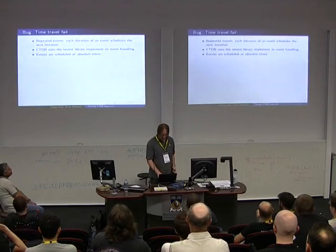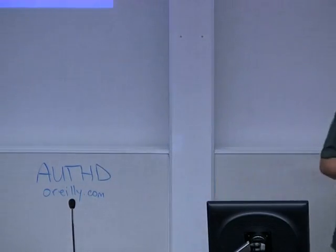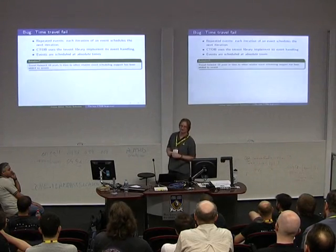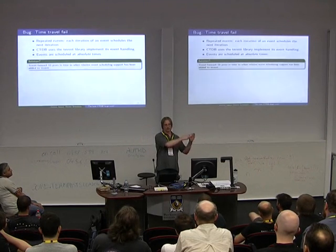How do you fix this? The fix is really simple: you travel forward 10 years in time, and by that time relative event handling will have been implemented in T-event and all problems will be solved. The crux of the monitor code: it runs scripts asynchronously, registers a callback that gets run when scripts complete, and when the callback is called — when scripts have either run or timed out — it schedules the next monitor event. There's no regular timer; we run one, schedule the next, run one, schedule the next. The scripts can take a while, so it's actually script execution time plus 15 seconds between events.